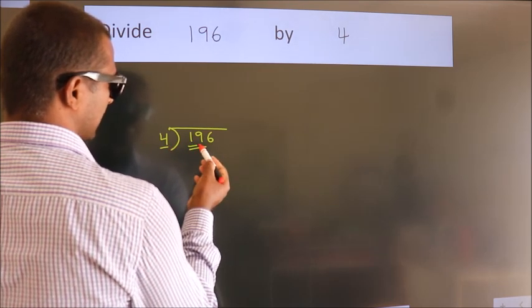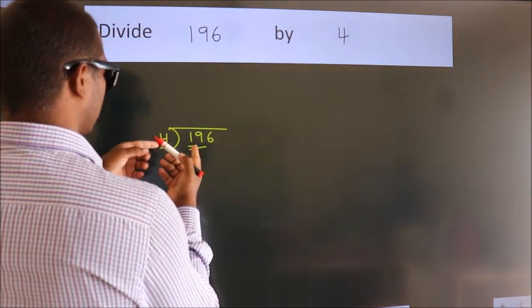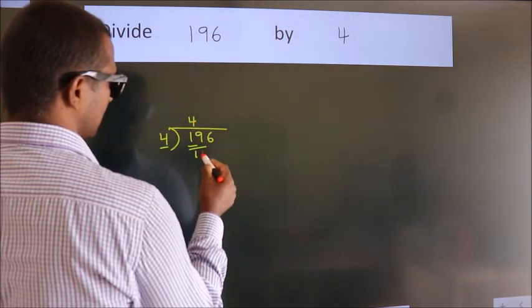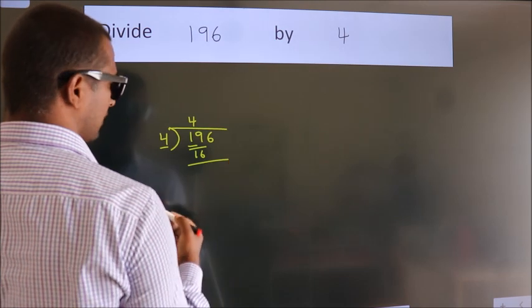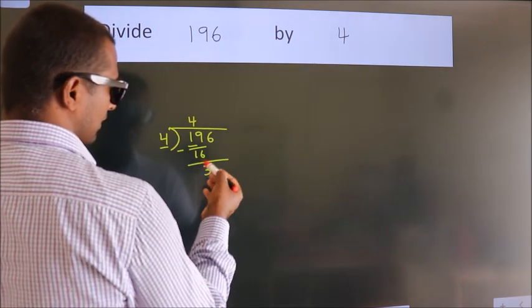A number close to 19 in the 4 table is 4 times 4 equals 16. Now we should subtract. We get 3.